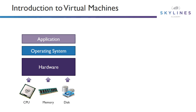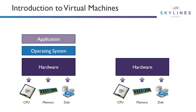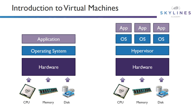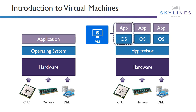Along came virtualization many years ago now, and the concept is still very similar. We still have our hardware — CPU, memory, and disk — but we install something in between, which is the hypervisor. And on top of the hypervisor can live multiple operating systems with multiple applications. So instead of just running one operating system that may only get used 10% of the time, we can run multiple operating systems and make much more use out of that CPU, memory, and disk. Every single one of these is essentially our virtual machine.